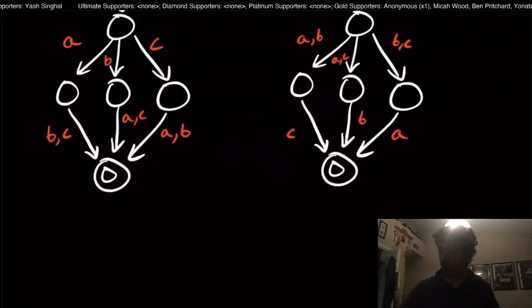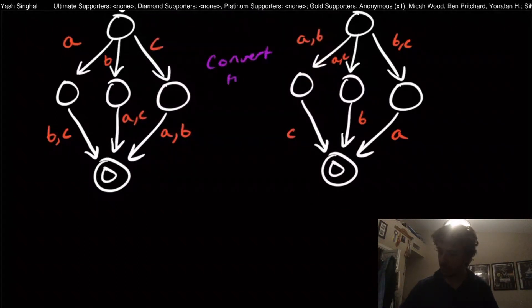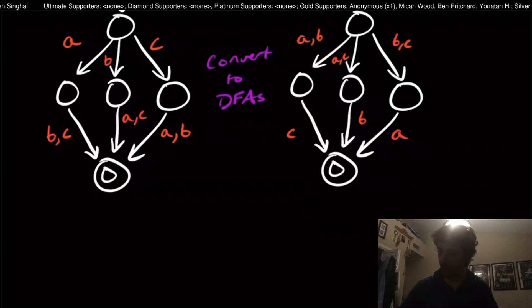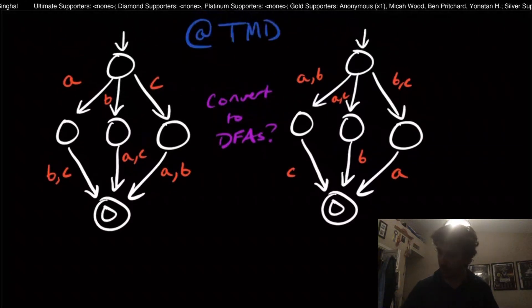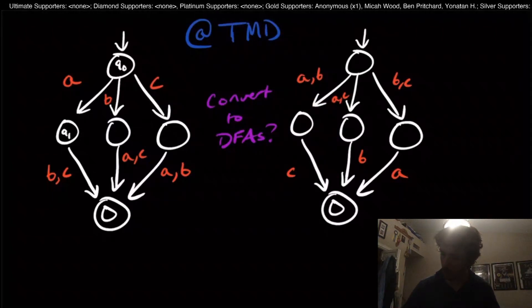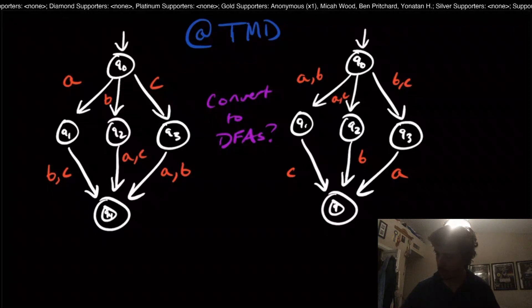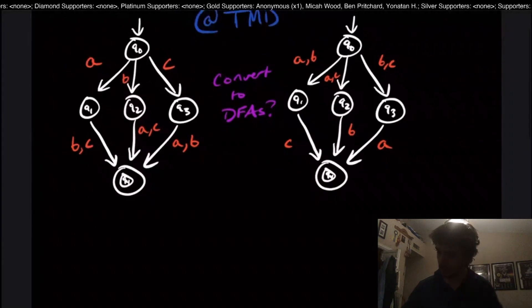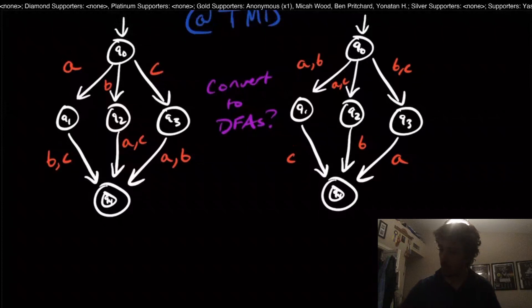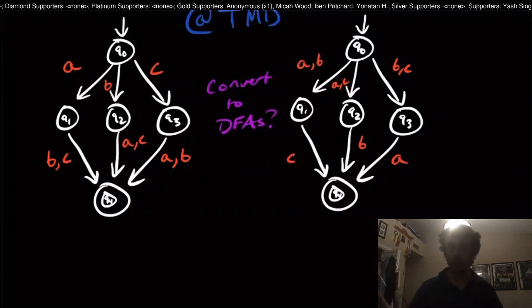What I want to show is what happens if we convert these to DFAs. Let's name each of the states: q0, q1, q2, q3, q4, and the same on the other side. The good thing about these is that there are no epsilon transitions, so we don't even need to worry about epsilon closure.